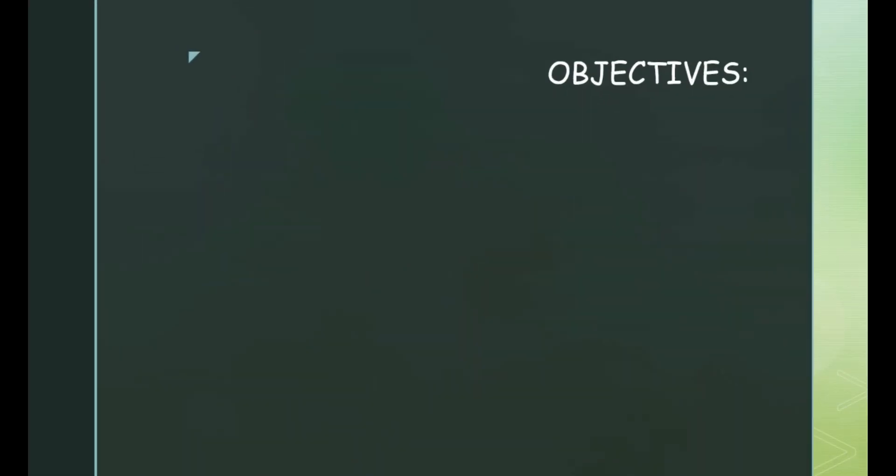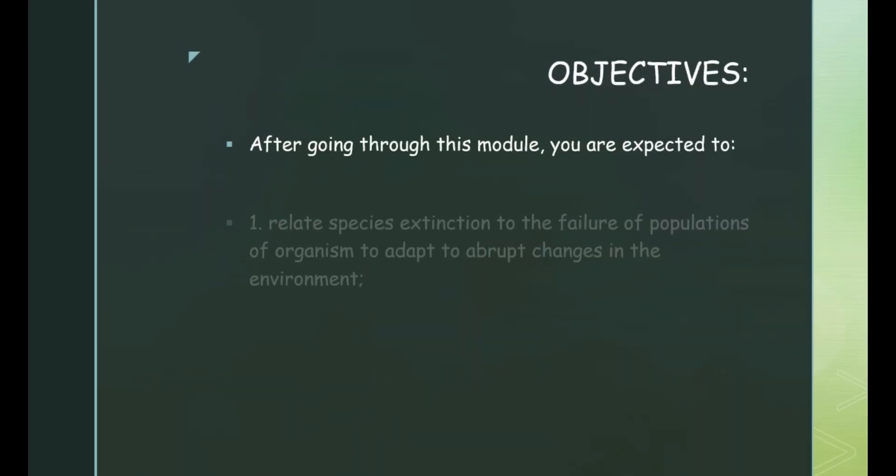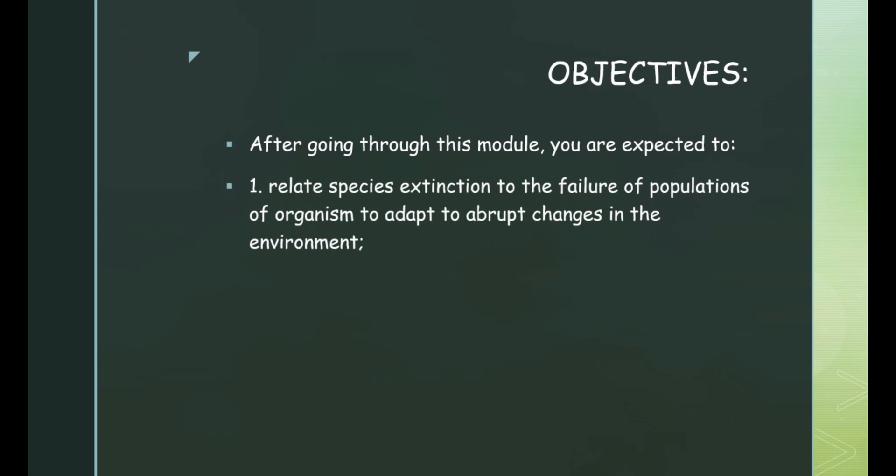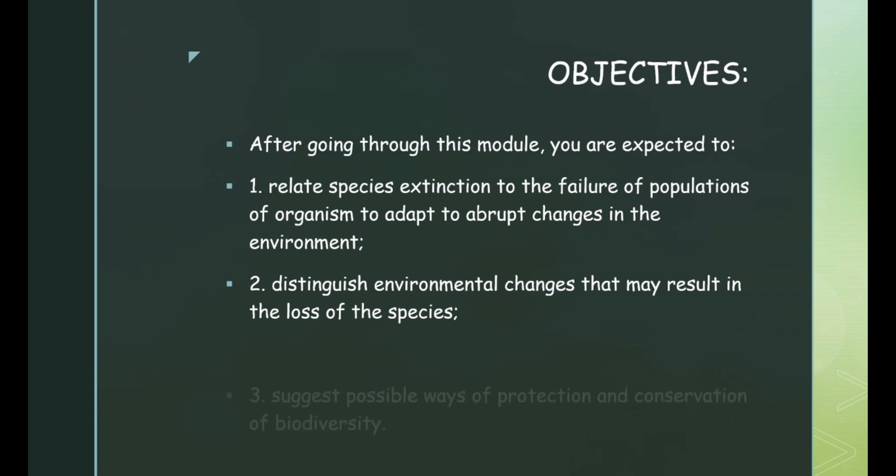So our goals for this clip is that you'll be able to relate species extinction to the failure of populations of organisms to adapt to abrupt changes in the environment, distinguish environmental changes that may result in the loss of species, and suggest possible ways of protection and conservation of biodiversity. And so with that, let's talk about module 5, Biodiversity.